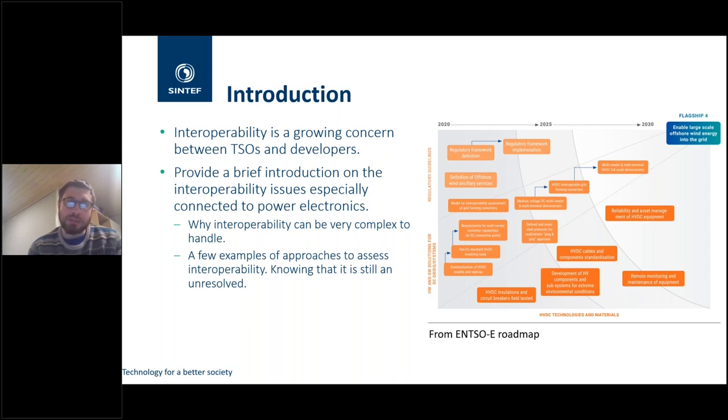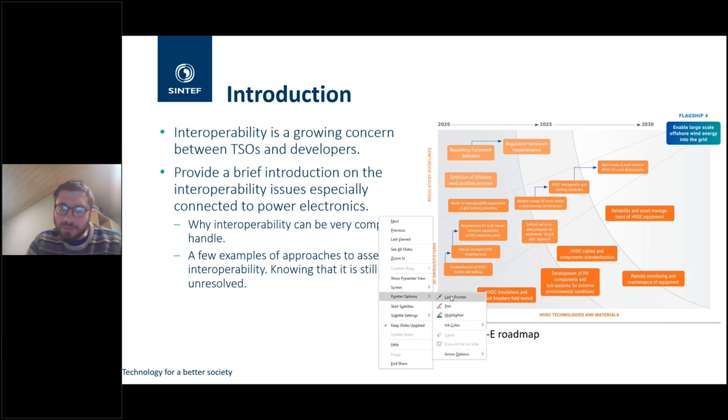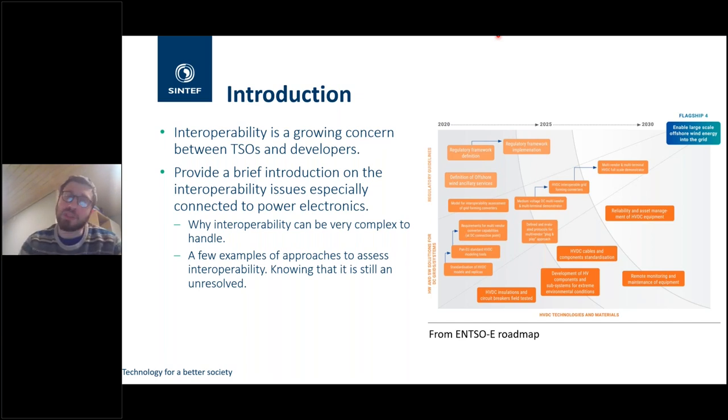I would like to stress that interoperability is a growing concern between TSOs and developers. On the right side of the slide, you can see an extract from the ENSOI roadmap. ENSOI is an association of the European TSOs, the transmission operators. To enable large-scale integration of offshore wind, they mark the roadmap, and part of this roadmap, at least in this middle part, is mostly referring to interoperability. How we can build a system that is interoperable and avoid that this will translate into possible catastrophe.